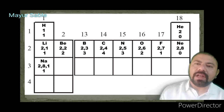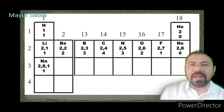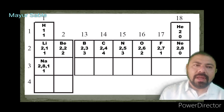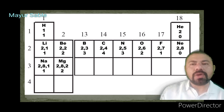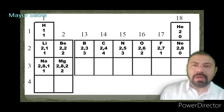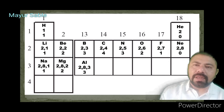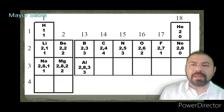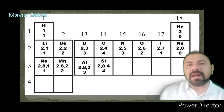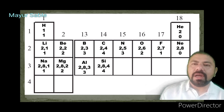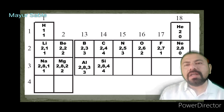Sodium (atomic number 11) has electronic configuration 2,8,1 — outermost shell contains 1 electron, valency is 1. Magnesium (atomic number 12) has configuration 2,8,2 — 2 electrons in valence shell, valency is 2. Aluminium (atomic number 13) has configuration 2,8,3 — can donate 3 electrons, valency is 3. Silicon, similar to carbon, has configuration 2,8,4 — 4 electrons in valence shell, valency is 4.